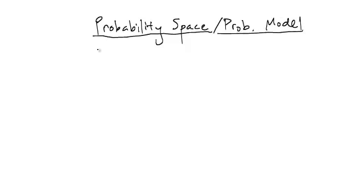And this is the thing that consists of two ingredients: the sample space, omega, and an assignment of probabilities, P.